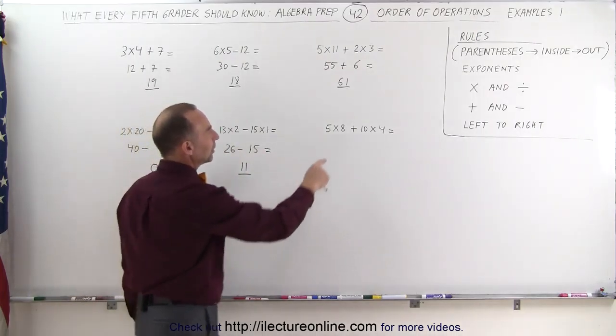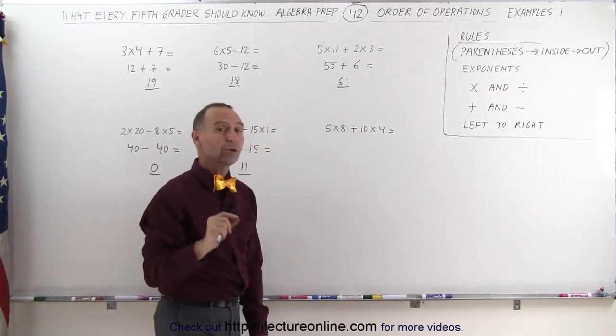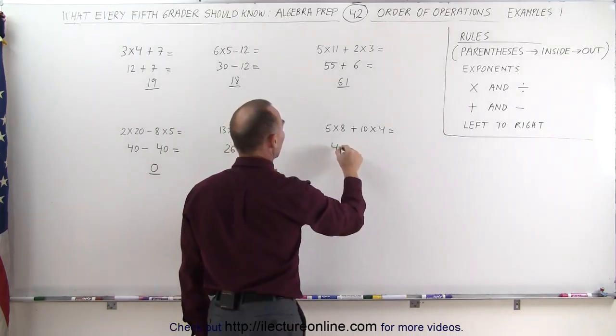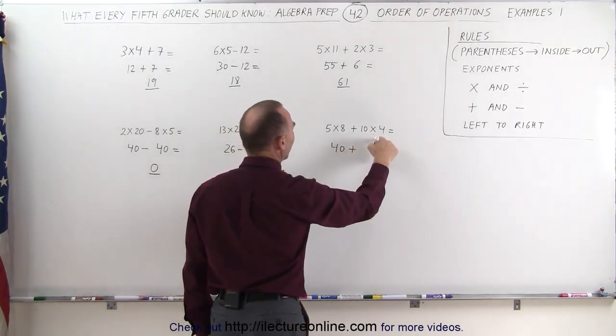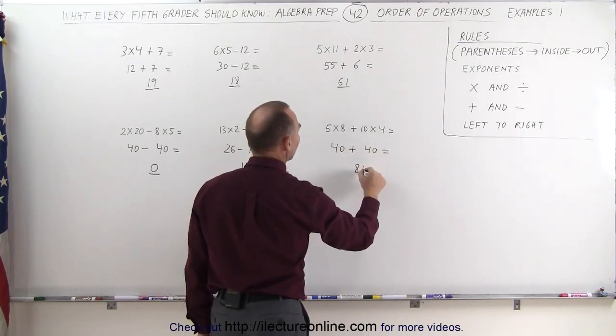And finally, we have 2 multiplications and an addition in the middle. Again, the addition has to wait. We do the multiplications first. 5 times 8, that's equal to 40, plus 10 times 4, which is equal to 40. And 40 plus 40 is equal to 80.